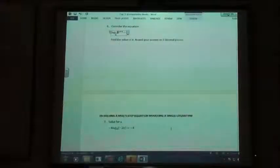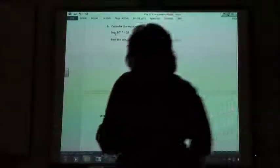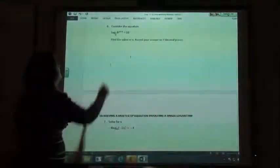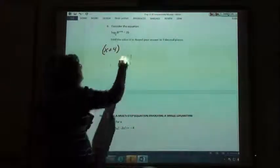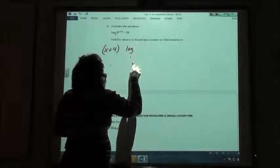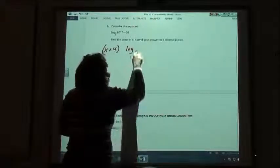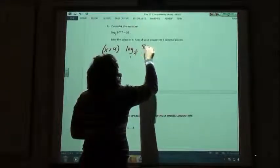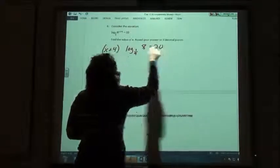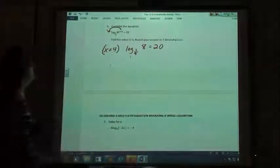Alright. Number six. Doing the same thing. I've got to fix mine because it's not showing up the whole question. Now it is. So, what should we do with that one? It's going to be (x+4) times log base 1/9 of 8 equals 20. Just took that exponent, put it out in front, and now what are we going to do?